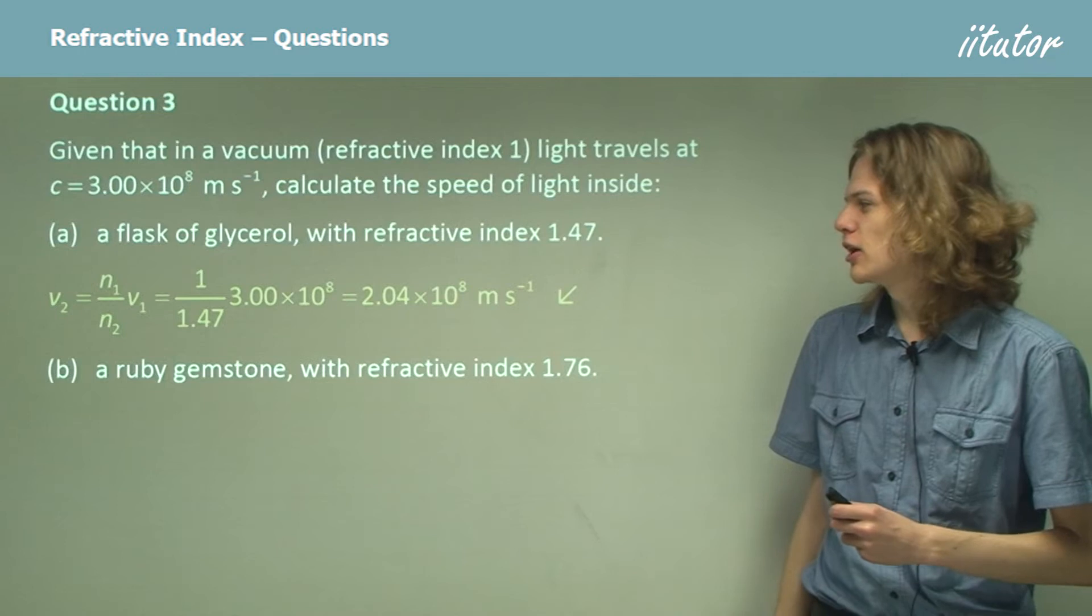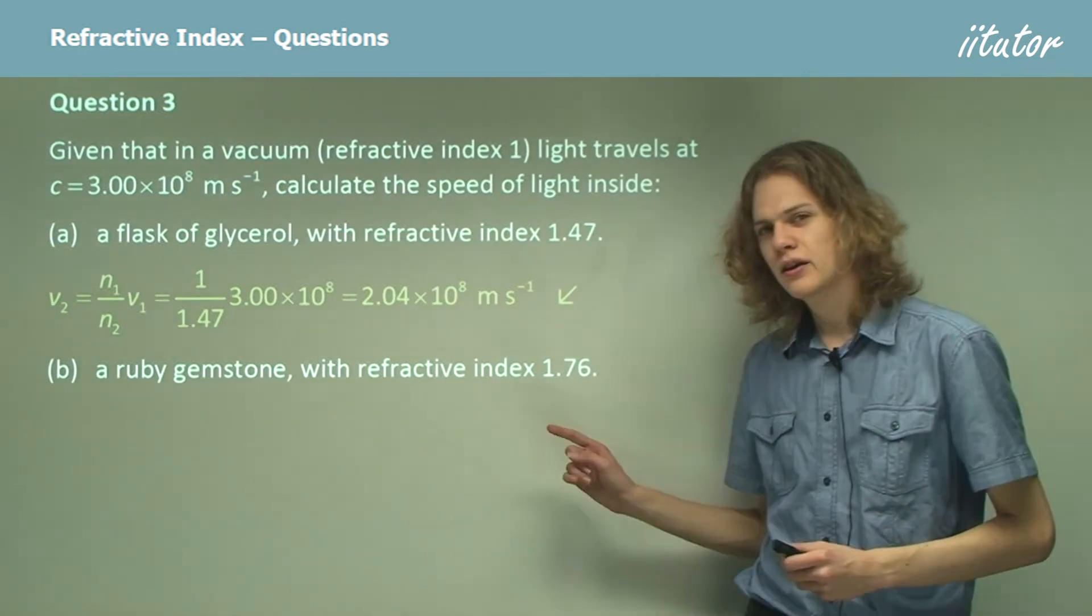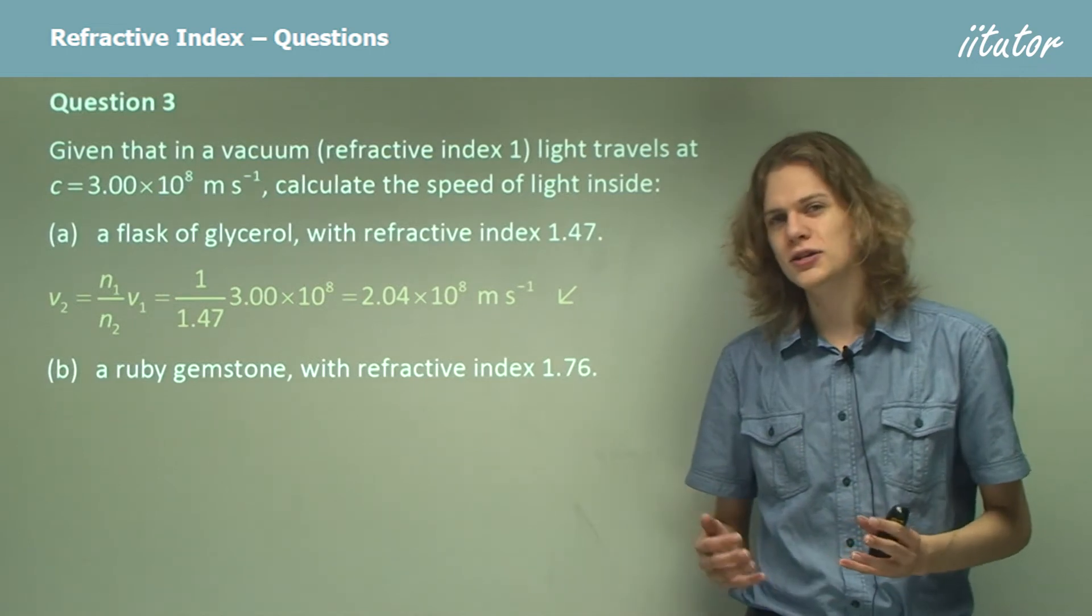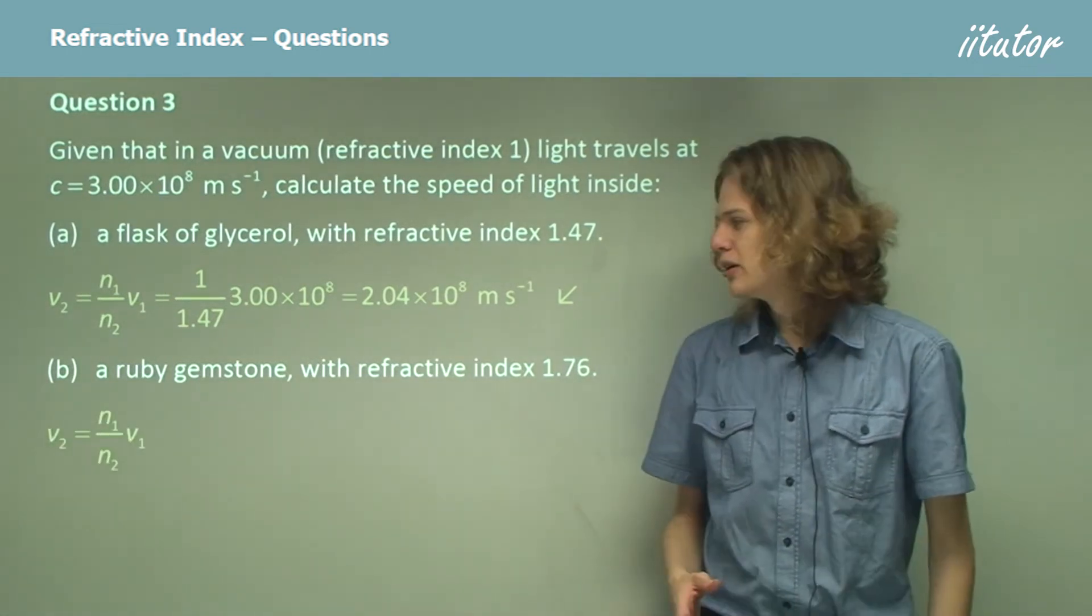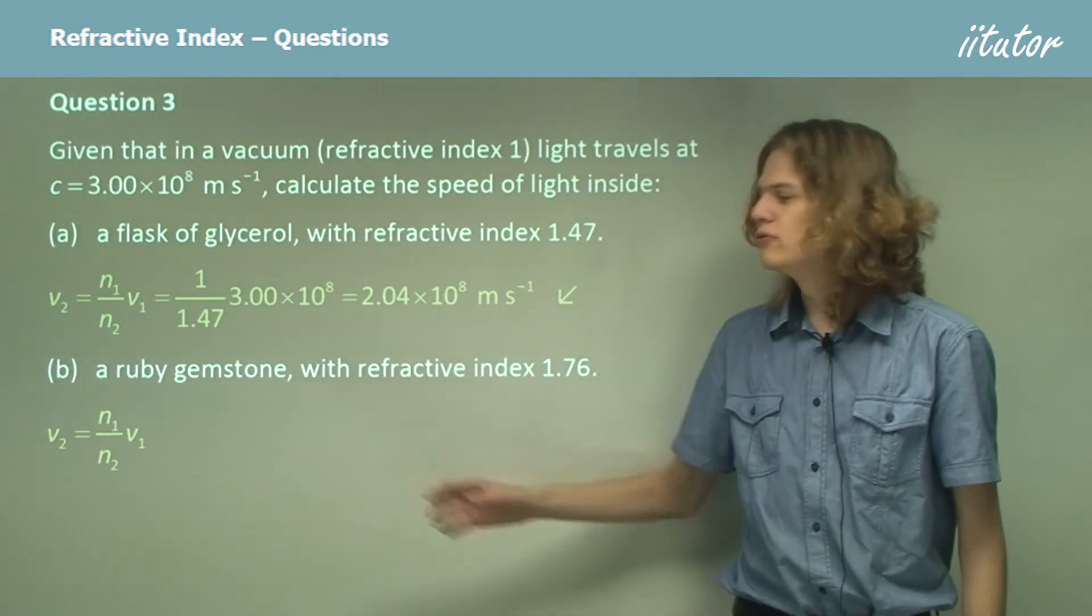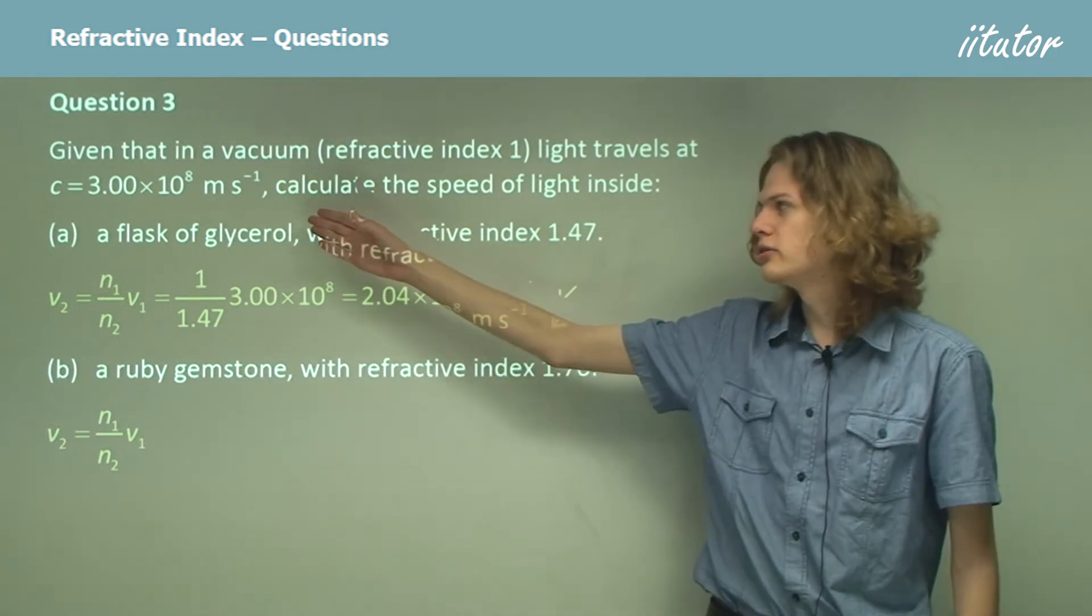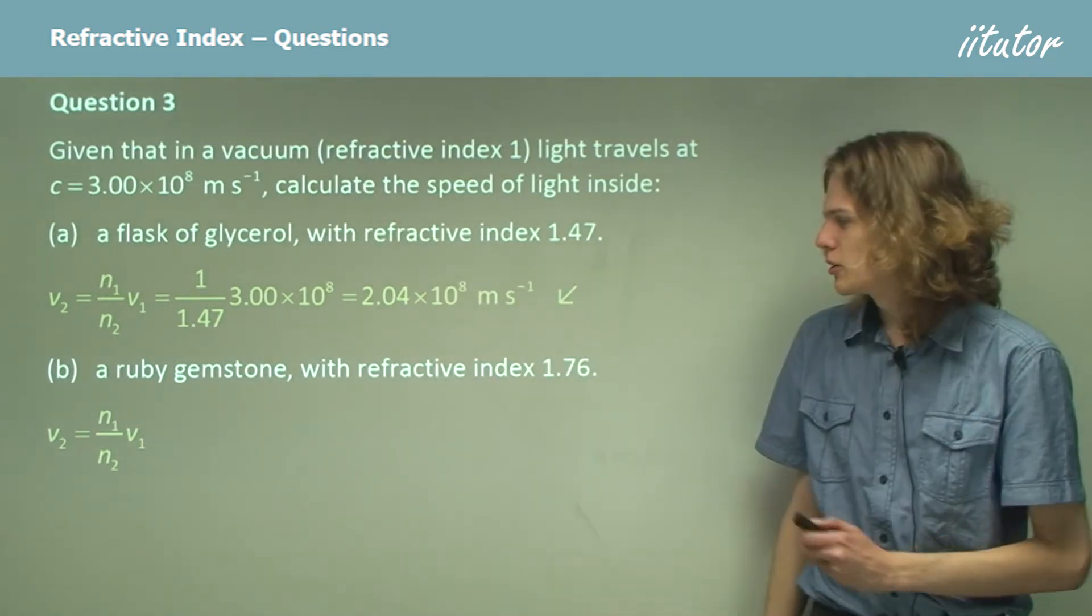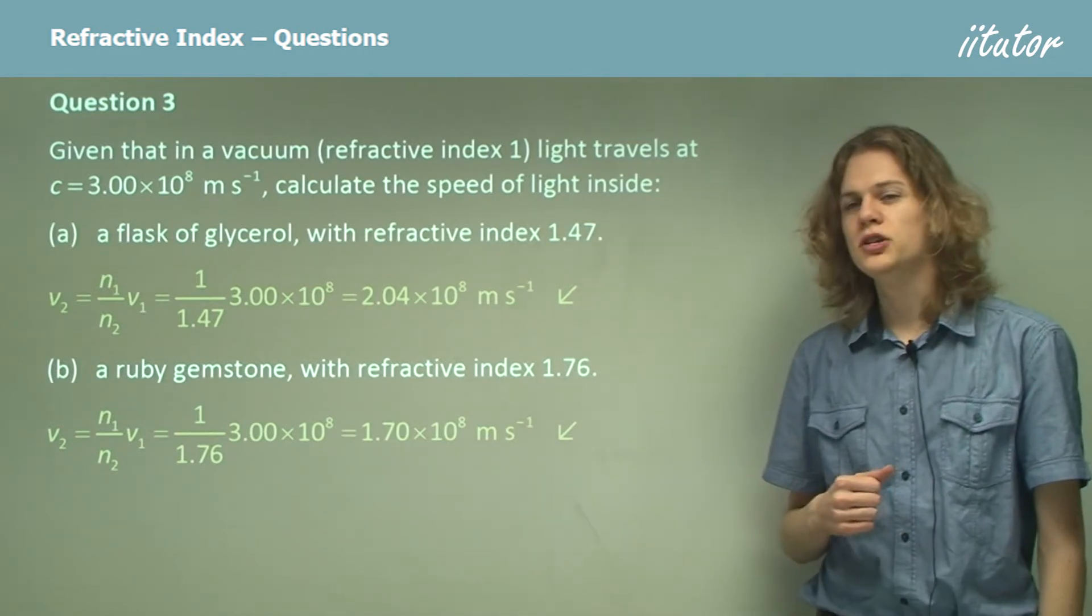Part B. How fast does light travel through a ruby, which has a refractive index of 1.76? Of course, in this case, we'll be using the same equation. V2 equals N1 over N2 times V1. Once again, N1 is simply 1 and V1 is going to be in a vacuum, light in a vacuum, 3 times 10 to the 8 meters per second. Substituting in the numbers once again, we end up with 1.7 times 10 to the 8 meters per second.